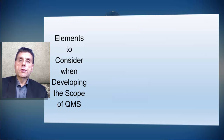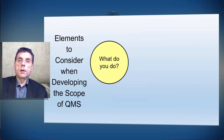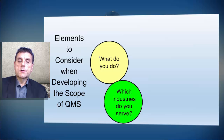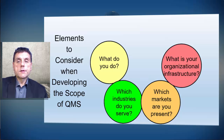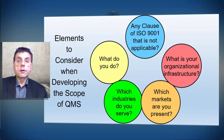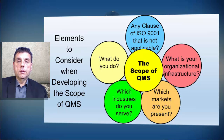Which elements should we consider when developing the scope of the Quality Management System? What do we do? Which industries do we serve? Which markets are we present in? What is our organizational infrastructure? Are there any clauses of ISO 9001 that are not applicable? All these elements will constitute the scope of the Quality Management System.